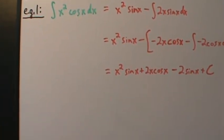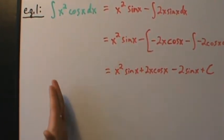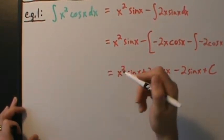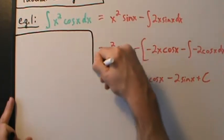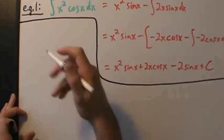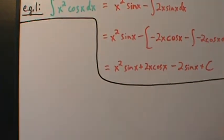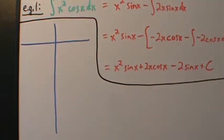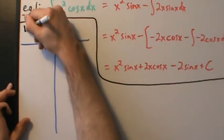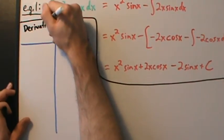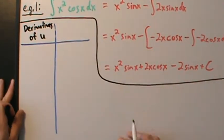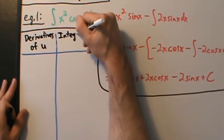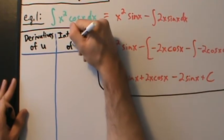So how do we do tabular integration? We make a little table with two columns — that's why it's called tabular integration. One column is going to be derivatives of u, and the column on the right is going to be integrals, or antiderivatives, of dv. Remember, with integration by parts, the formula says: integral of u dv equals uv minus the integral of v du.